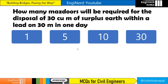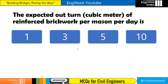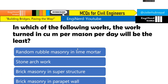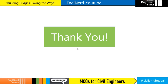How many masons are required for disposal of 30 cubic meter of surplus earth within a lead of 30 meters in one day? One mason can dispose 2.83 cubic meter per day, so dividing 30 by 2.83 gives approximately 10 masons. The expected outturn of reinforced brick work is 1 cubic meter per mason per day. Among all work types, the least outturn in cubic meter per mason per day is stone arch work at 0.4. Thank you for watching.